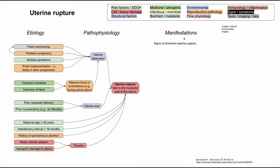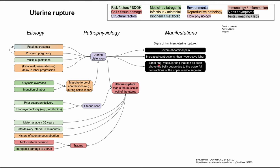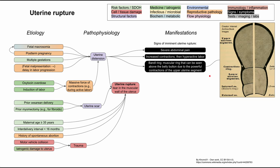Now let's talk about the signs of imminent uterine rupture before it actually happens. It will be extremely painful for the mother. She can have increased contractions and hyperactive labor. It's also worth knowing about Bandl rings — muscular rings visible from outside the abdomen, above the belly button, due to powerful contractions of the upper uterine segment. The upper uterine segment bulges out, and if it becomes really tense and rupture is imminent, that bulging can be seen externally. If visible from the skin, it's called a Bandl ring and is a sign of imminent uterine rupture.